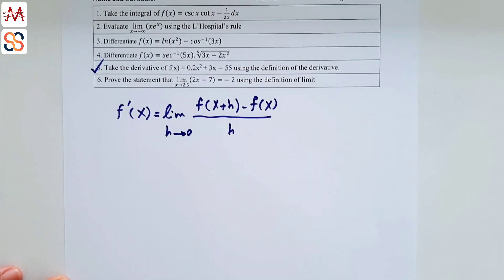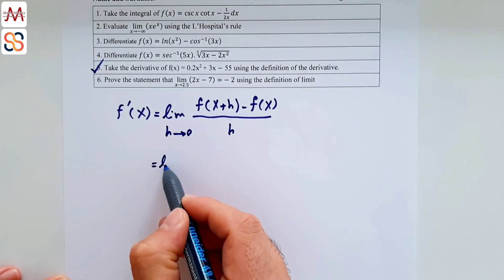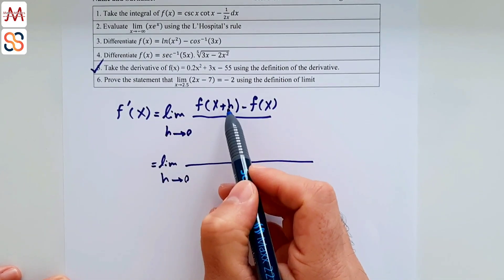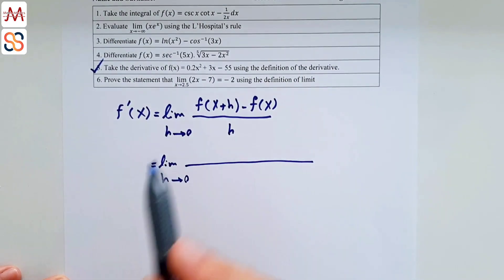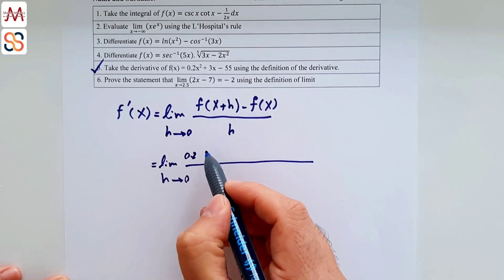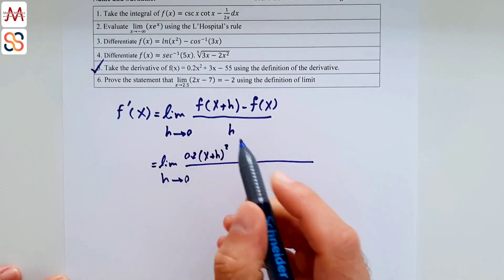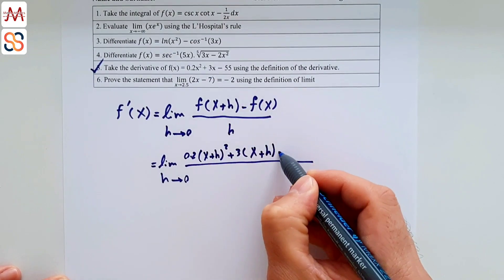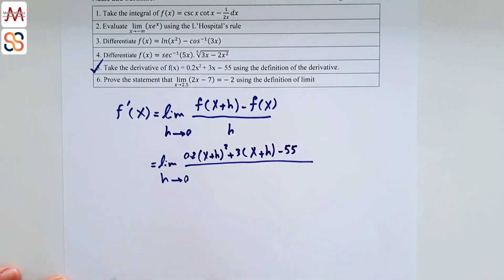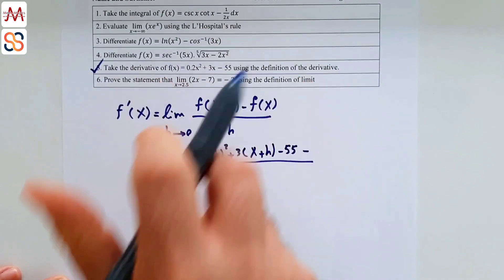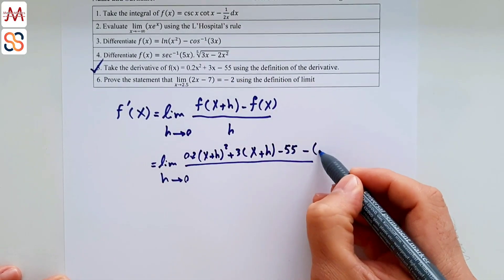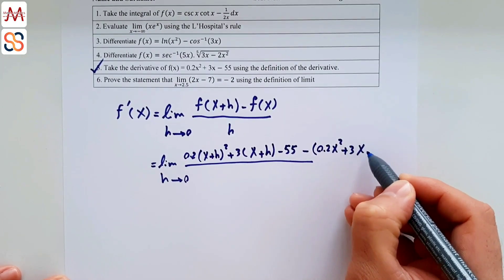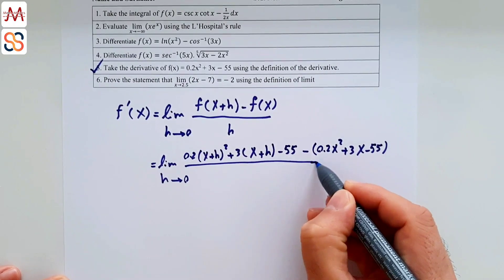Constructing the limit: plug in (x+h) for x in the original function. So we get lim(h→0) of [0.2(x+h)² + 3(x+h) - 55 - (0.2x² + 3x - 55)] all divided by h.